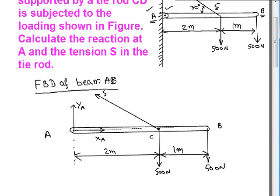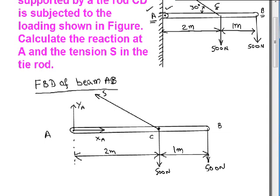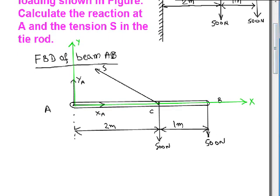We can also choose an X axis and Y axis as shown here. Now we can apply the conditions for equilibrium. We have shown a total of 5 forces on the beam: YA, XA, the force S, and two 500 Newton forces. We can use 3 equilibrium conditions to find the unknown forces.